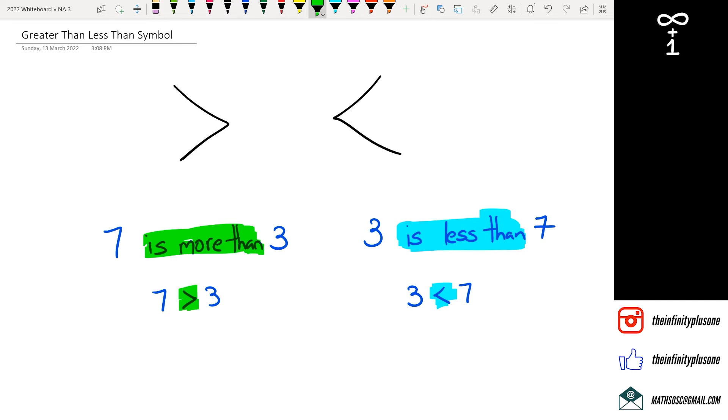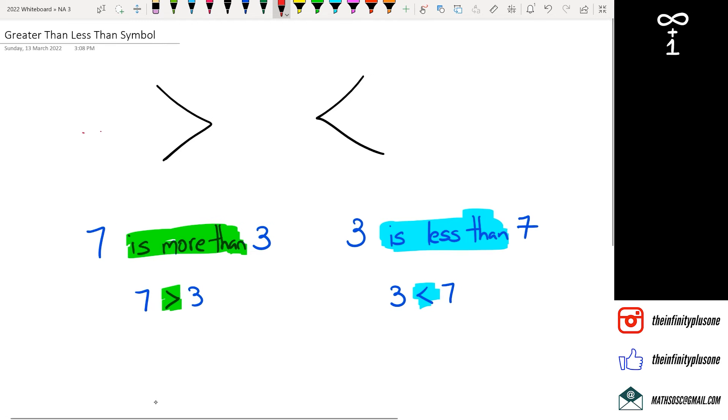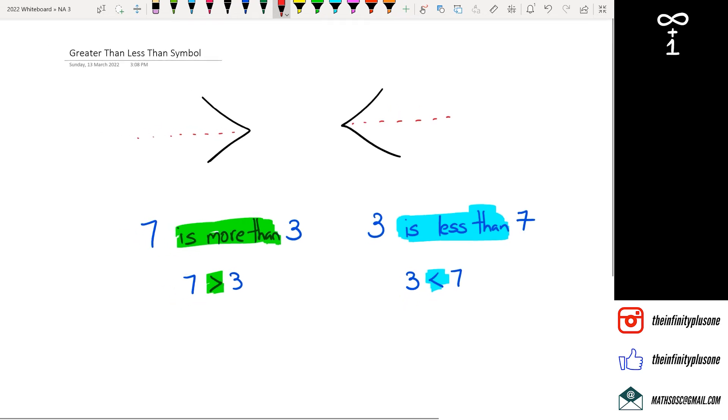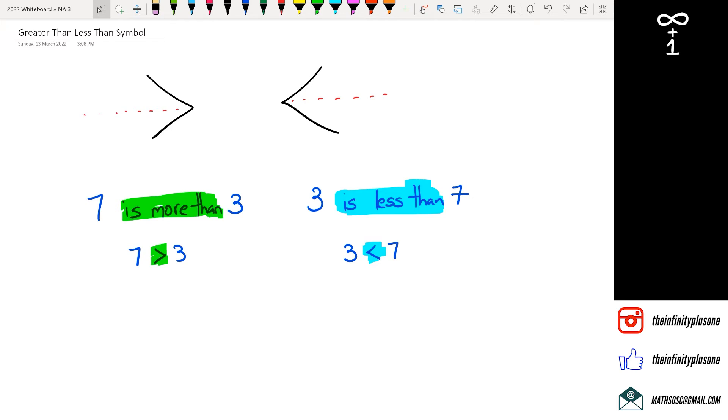The other way that I like to think about it is if I think about the greater than or less than symbol, it kind of looks like a little arrow. So you've got this arrow that's pointing. I could say that wherever the symbol is pointing towards, that generally tends to be the smaller number.